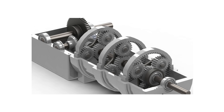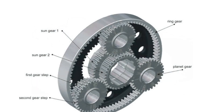In conclusion, the planetary gearbox is a remarkable piece of engineering that efficiently distributes power through its unique arrangement of gears. By understanding its structure — which includes the sun gear, planet gears, and ring gear — we can appreciate how this system achieves high torque and compact design. Whether in automotive applications or industrial machinery, the planetary gearbox plays a crucial role in enhancing performance and reliability. Thank you for watching, and we hope this exploration has deepened your understanding of this fascinating mechanical system.